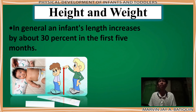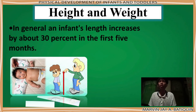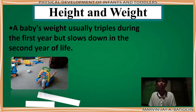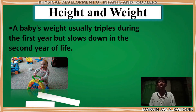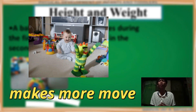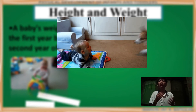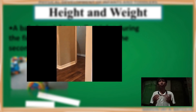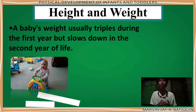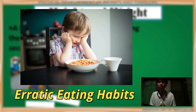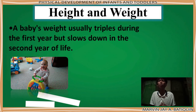In general, an infant's length increases by about 30 percent in the first five months, because they start growing — their muscles start flexing and activating, gradually changing day by day. Fourth, a baby's weight usually triples during the first year but slows down in the second year of life. In the first year, babies are just always lying on their bed. In the second year, the baby usually makes more moves, develops their motor skills, and is already able to stand alone and walk. When an infant is able to walk, the term changes to toddler. This may also lead to erratic eating habits, meaning they eat irregularly because they are always focused on what they are doing — as long as they move around and have fun, they forget to eat. That is why in the second year, they slow down their weight gain.